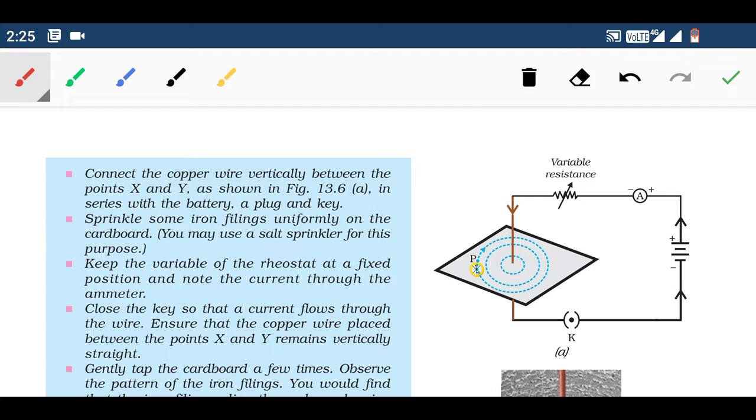Remember, you need to have a battery, an ammeter which measures electricity, a variable resistance or rheostat, and a key switch which can stop or turn on current. You also need a cardboard which can be fixed in this way, and on this cardboard, you have to spread iron powder.